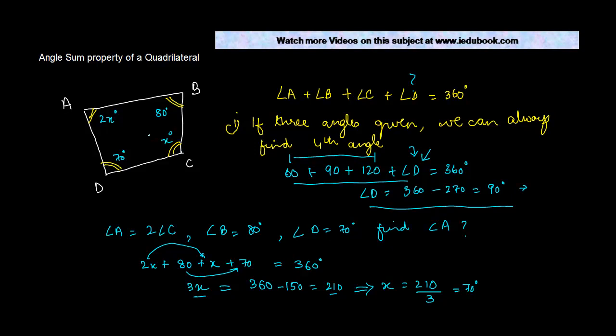So C equals x will be 70 degrees, and A equals 2x equals 140 degrees. Again, as I said, this quadrilateral is just illustrative.